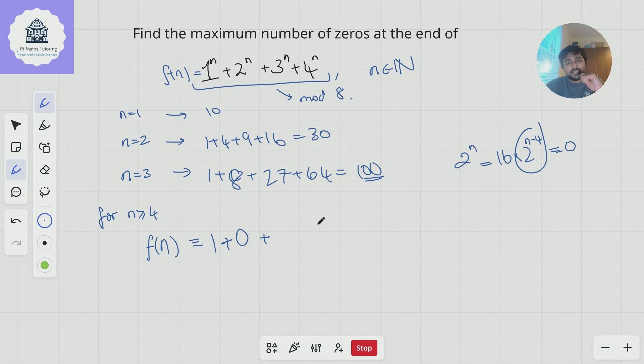Now for 3^n mod 8, let's think about what that can be. 3¹ = 3 mod 8, 3² = 1, 3³ = 3. It alternates: 3, 1, 3, 1, 3, 1. So 3^n is either 3 or 1 mod 8.